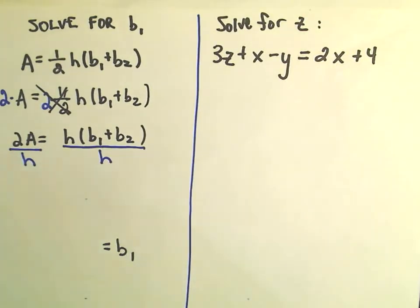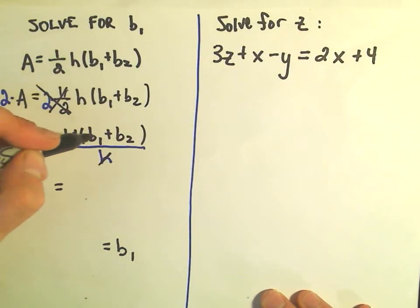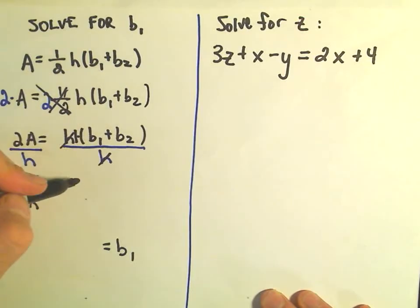On the right side, h divided by h is just one. On the left side, there's really nothing to simplify down, so we still have 2A over h. You can think about in the numerator there being a positive one in front of the b1 plus b2. If you distribute that, we'll be left with b1 plus b2.